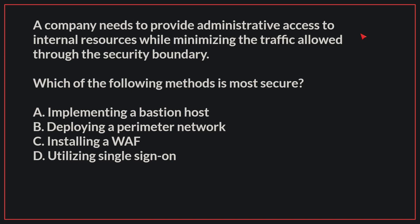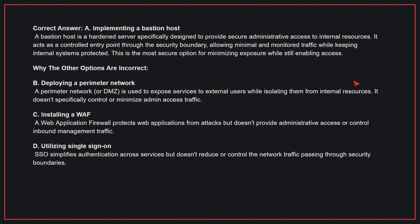A company needs to provide administrative access to internal resources while minimizing the traffic allowed through the security boundary. Which of the following methods is the most secure? The correct answer is A: Implementing a Bastion Host. A Bastion Host is a hardened server specifically designed to provide secure administrative access to internal resources. It acts as a controlled entry point through the security boundary, allowing minimal and monitored traffic while keeping internal systems protected.